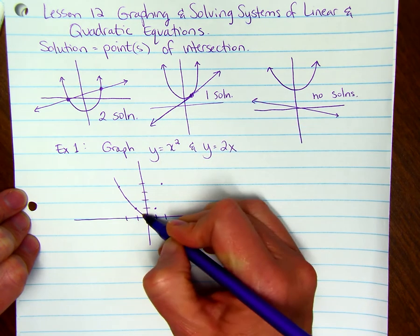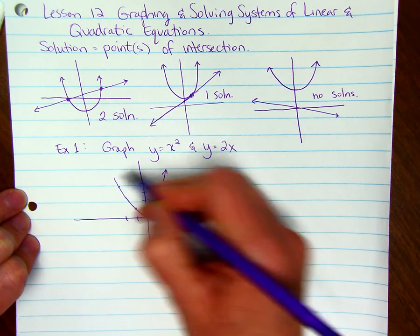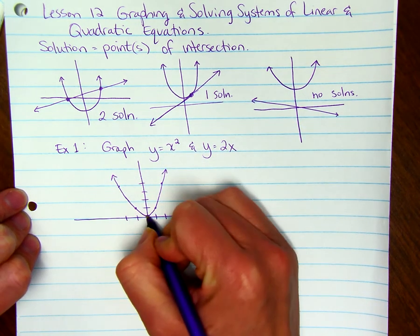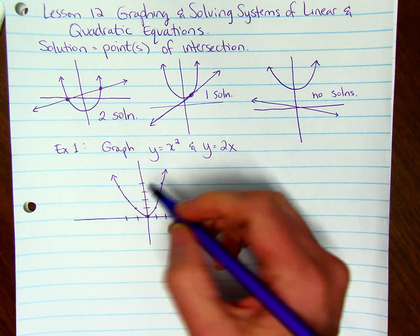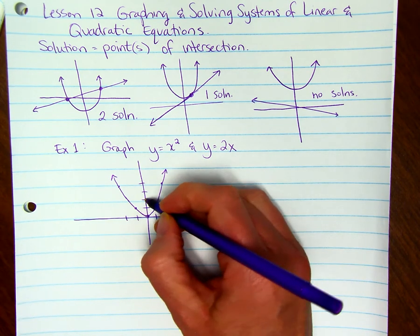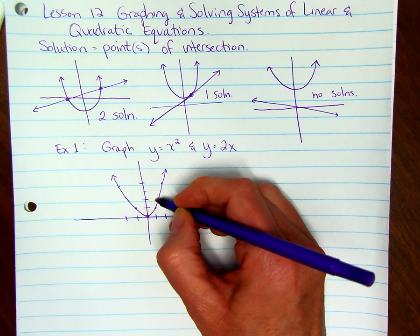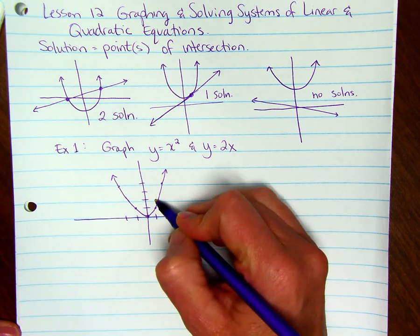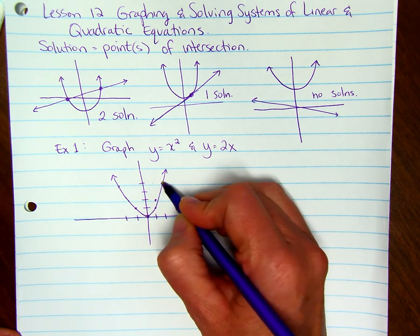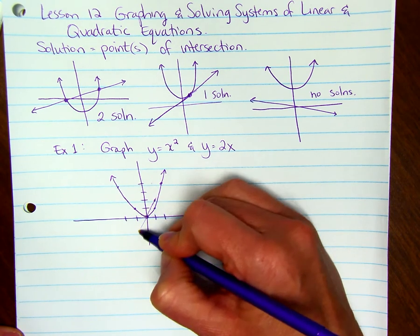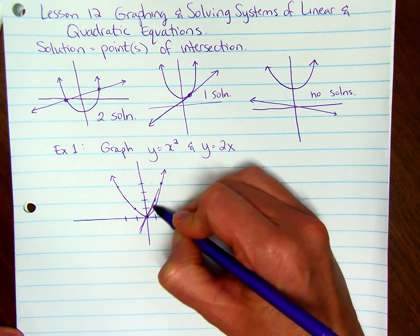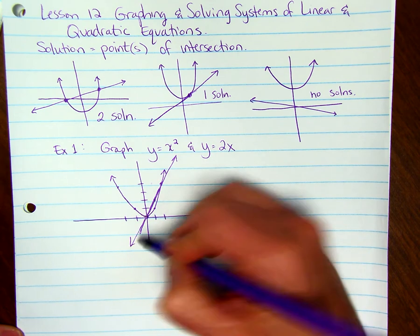So y = 2x goes through (0,0), and then the slope is 2 over 1. So you can rise 2 and go over 1, rise 2 and go over 1. So it's a line that's going to go through (0,0) and (2,4).